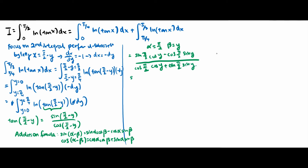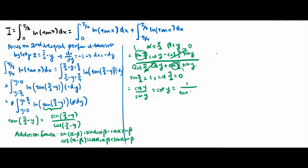We now know that sine(pi/2) equals 1 and cosine(pi/2) equals 0. So the terms with cosine(pi/2) are all 0, and this whole fraction simplifies to cosine(y) over sine(y), which is equivalent to cotangent(y), and also equivalent to 1 over tangent(y). So substituting this answer into the function.